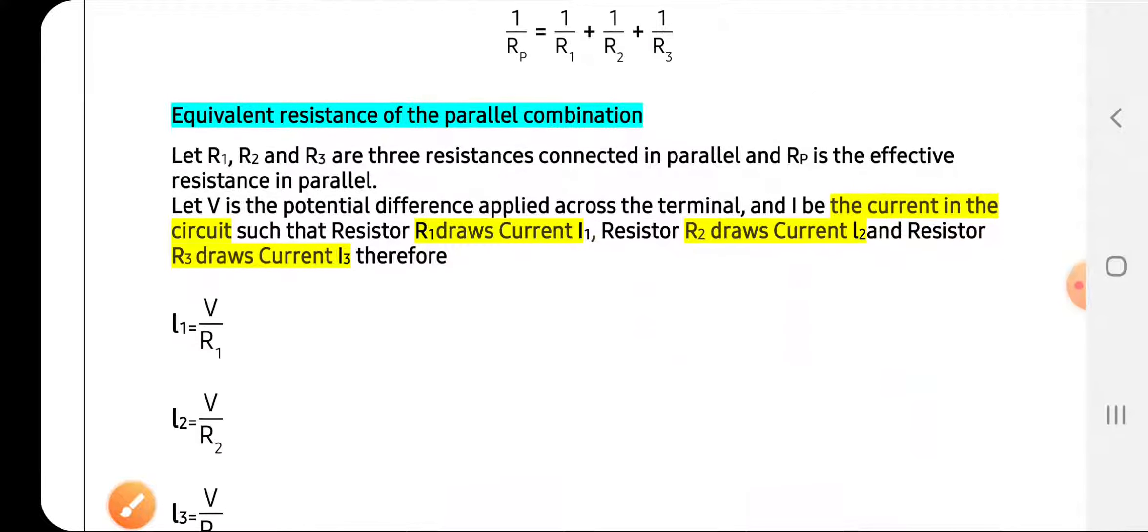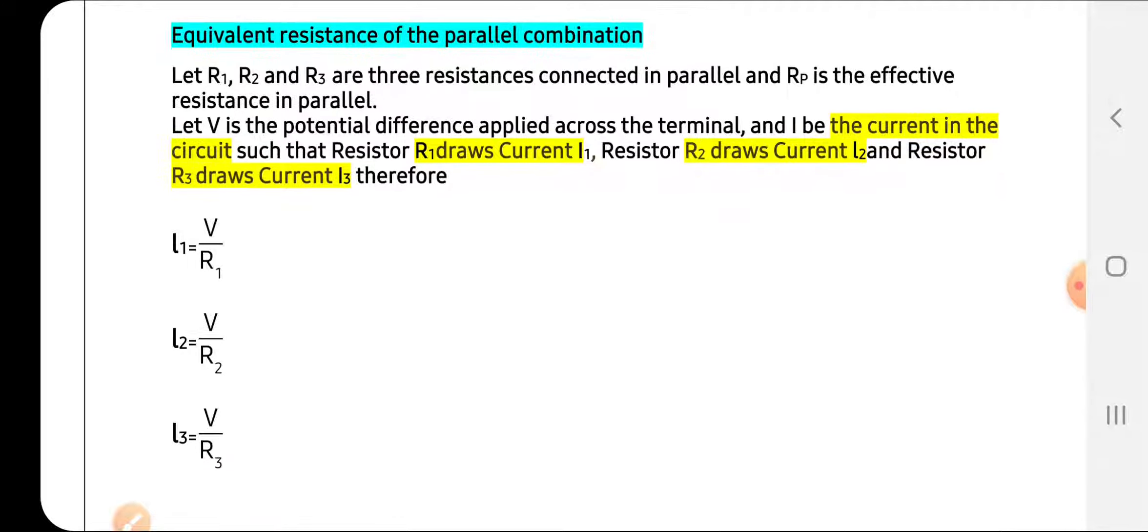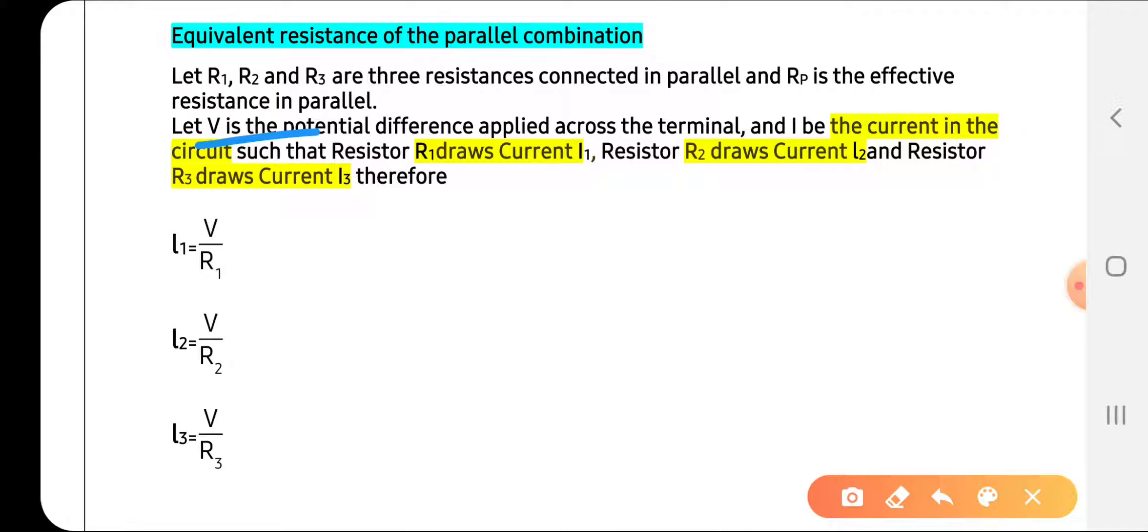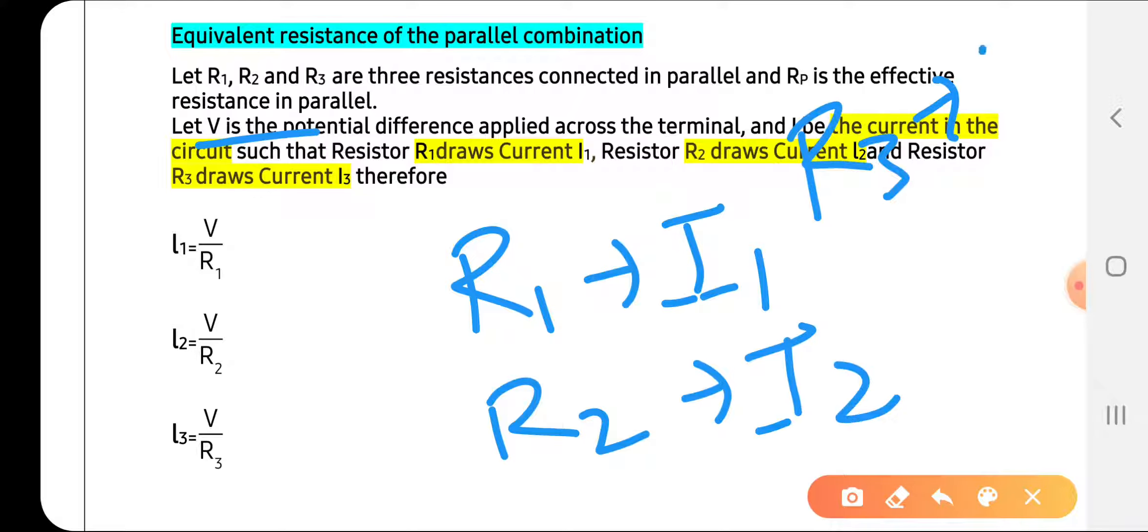Let us know how this formula is formulated. Let R1, R2, and R3 be the resistors connected in parallel, and total resistance is Rp in parallel combination. Let V be the potential difference across the terminals of the resistors, and I be the current flowing such that I1 flows through R1, I2 through R2, and I3 through R3. Current divides when we use parallel combination, and potential difference remains same because it is parallel combination.